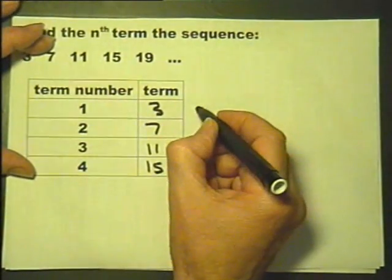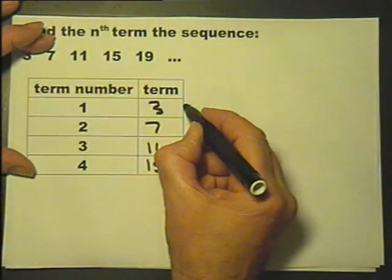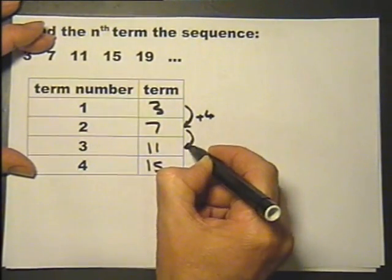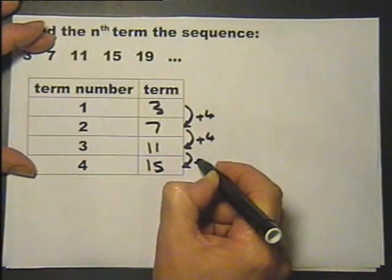Let's work out the differences. In other words, the term to term. The term to term here is add 4.